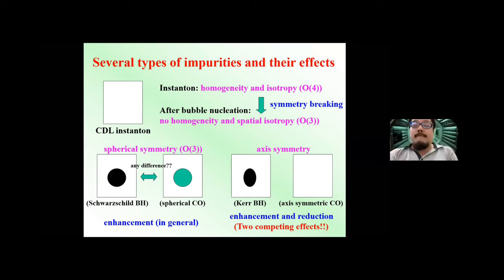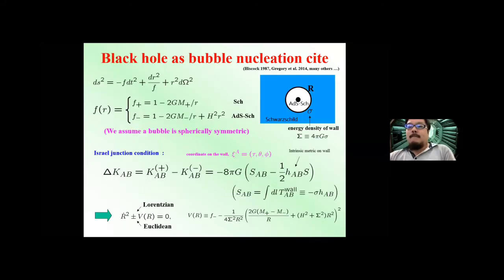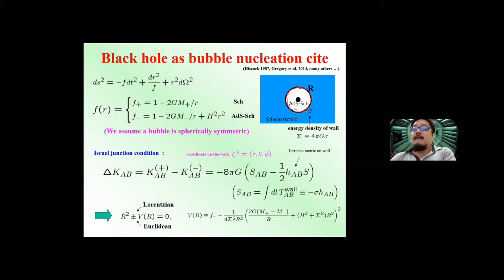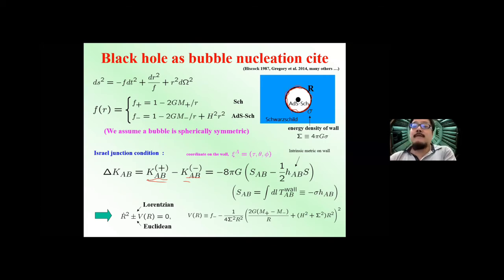Now let's consider the first case: the Schwarzschild black hole as a bubble nucleation site. The technique is quite similar. We consider some bubble nucleated, with the outside described by the Schwarzschild metric and inside by the AdS-Schwarzschild metric. Using the Israel junction condition — the difference of extrinsic curvatures inside and outside is compensated by the wall tension — we can easily derive a simple equation for the bubble radius. In the CDL (Coleman-De Luccia) case, we can have analytic solutions, but in general it's more complicated.